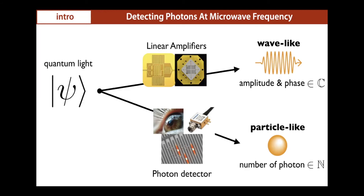You can choose another type of detector: photon detectors. These are ubiquitous in nature — our eyes are a good photon detector. Photon detectors reveal the particle-like character. The result we expect from a photon detector is a number — a whole number.